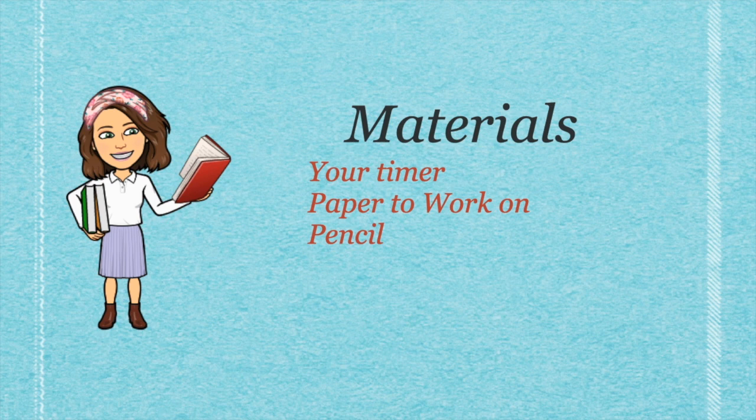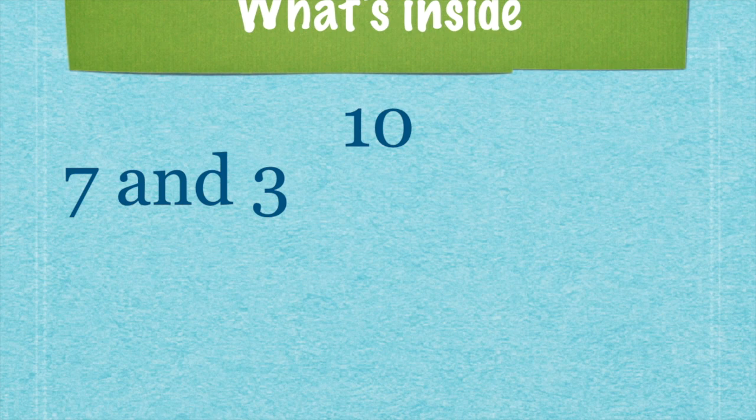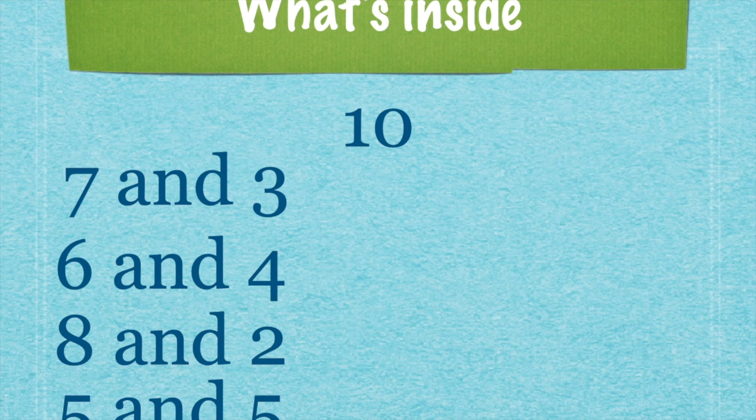From that very first kindergarten lesson, your teacher probably gave you 10 counting blocks or counting sticks and brought you to the carpet and said, how many different ways can you make this number? Some of you raised your hands and said you can have 7 and 3, or 6 and 4, you can have 8 and 2, you can have 5 and 5. You've been doing this since kindergarten.